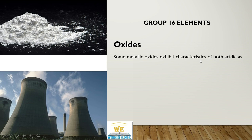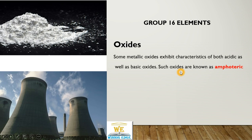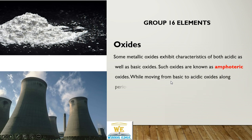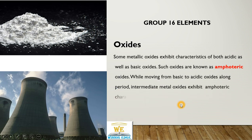Some metallic oxides exhibit both acidic as well as basic character, like aluminum oxide. They are known as amphoteric. By going from basic to acidic oxides in the middle of a period, we will get intermediate amphoteric oxides like aluminum oxide.